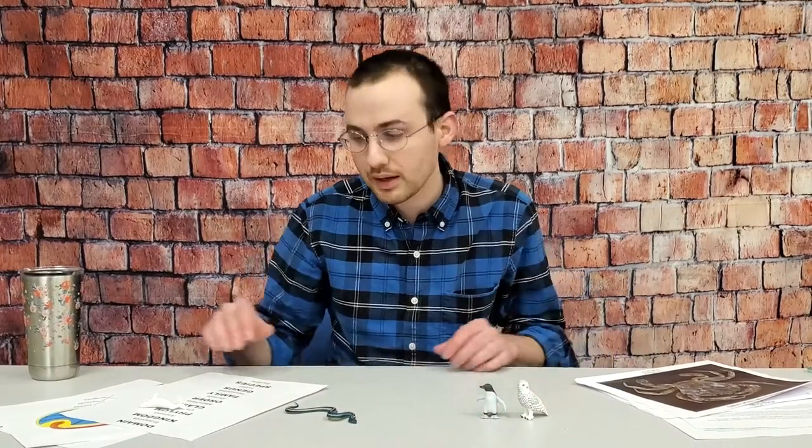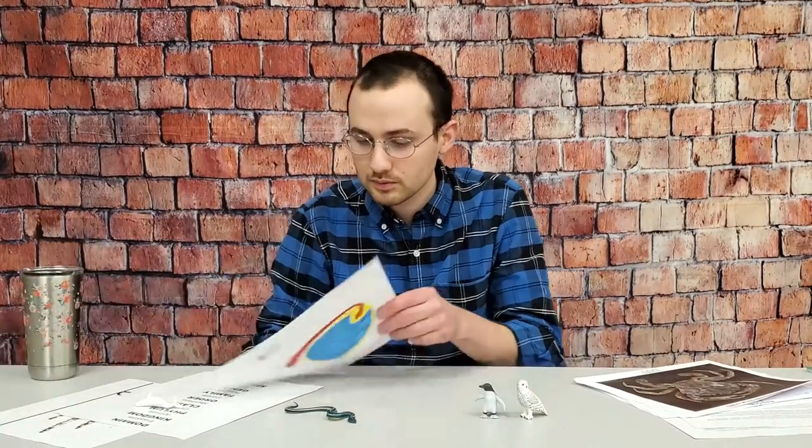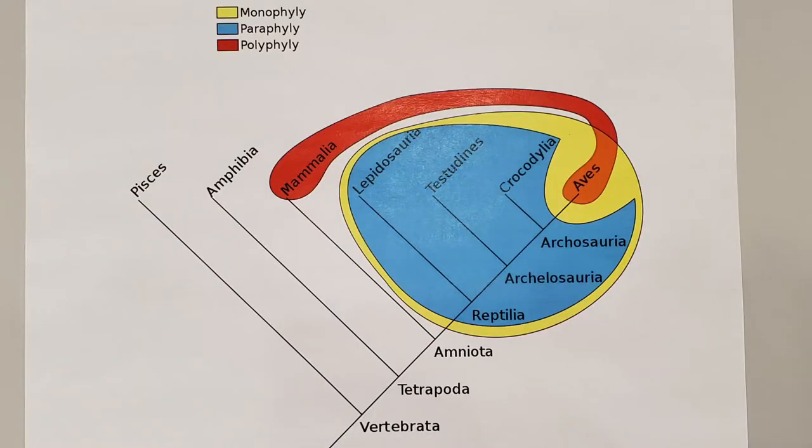But if you use more advanced methods — like genetic sequencing, where you look at the DNA of specific organisms — you find this doesn't really work, because some reptiles are more closely related to birds. Crocodiles, for instance, are really closely related to birds compared to other reptiles. I have a little picture of this called an evolutionary tree, where you can see aves, which is birds, and crocodilia are grouped together.